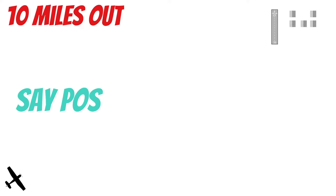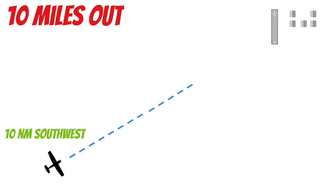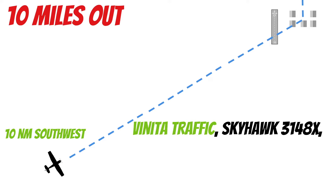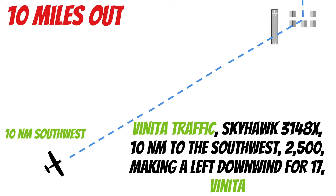The next call you should make is when you're 10 miles out inbound for landing. We need to say our position and our intentions. Knowing I'm 10 miles to the southwest and intending to enter a left downwind for 17, that call would sound like: 'Veneta traffic, Skyhawk 3148 X-ray, 10 nautical miles to the southwest, 2,500, making a left downwind for 17, Veneta.' Don't forget — part of your position is your altitude.